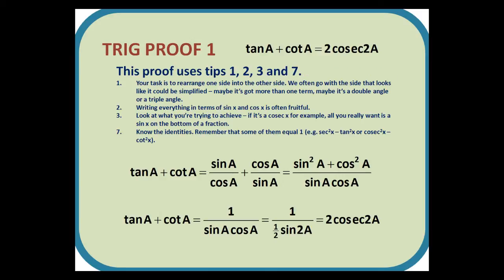Trig proof 1. tan a + cot a = 2cosec 2a. This proof uses tips 1, 2, 3 and 7. We start by writing tan a and cot a in terms of sin and cos. Then we add the fractions together, which essentially means cross multiplying, giving us a numerator of sin²a + cos²a, which of course equals 1. So we've got 1/(sin a cos a), but sin a cos a is half of sin 2a, because sin 2a is 2sin a cos a. So we have 1/(1/2 sin 2a), which in turn is 2cosec 2a as requested.